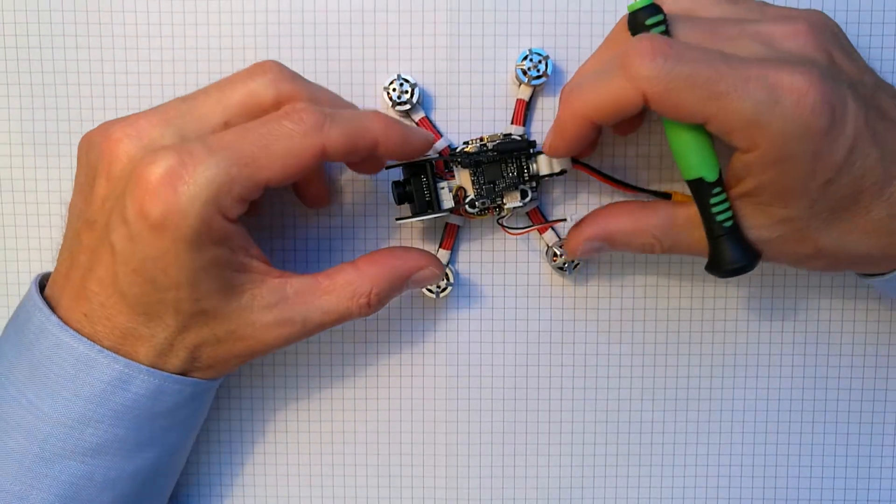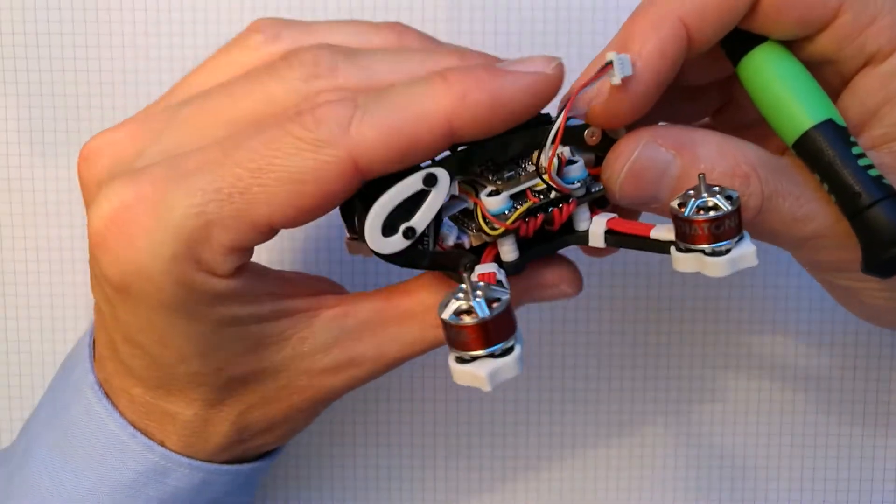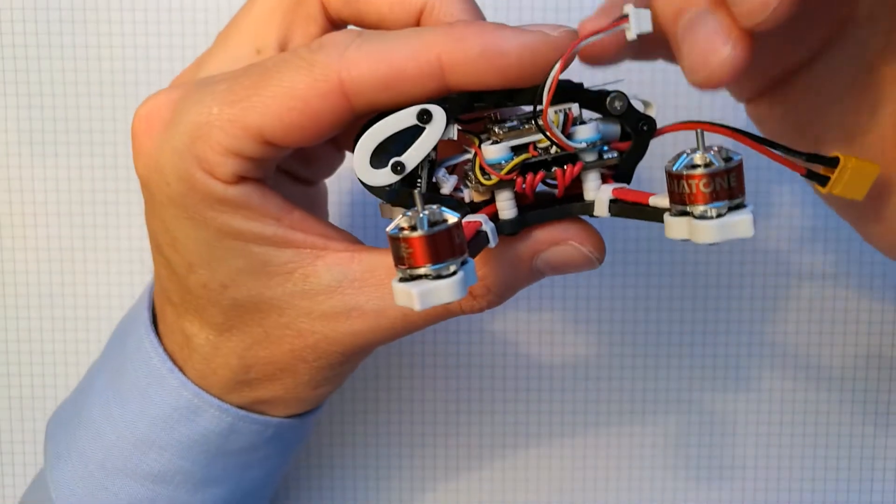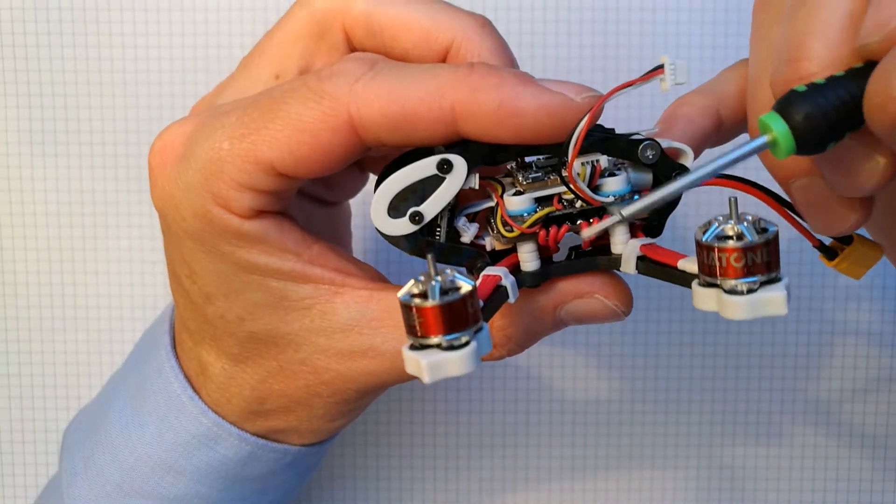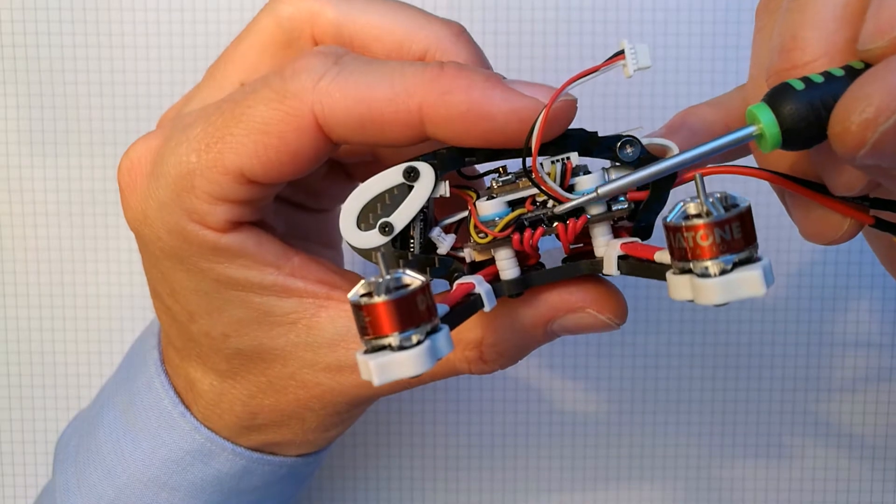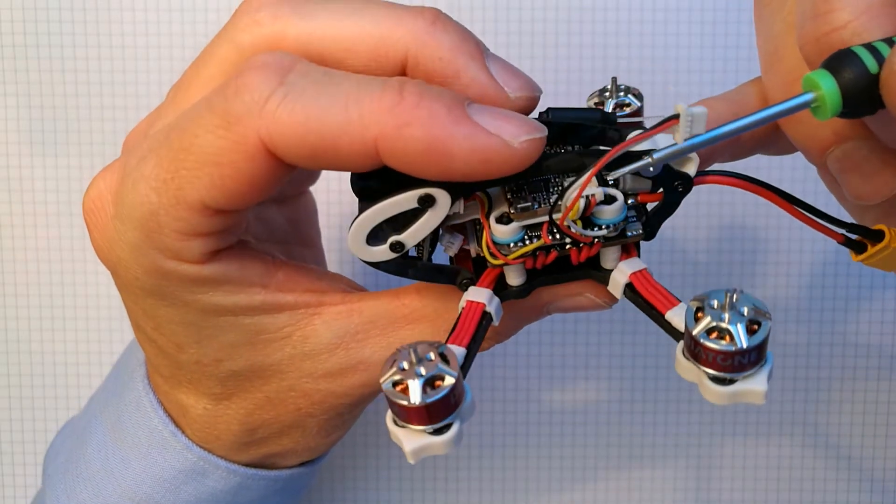Let's have a closer look at the new version now. The stack is changed over to a more conventional style, with the 4-in-1 ESC at the bottom, the flight controller in the middle, and the TBS Unify video transmitter on top of the stack.